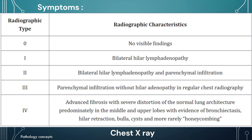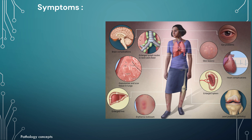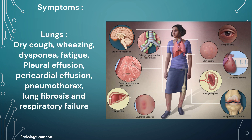Based on X-ray findings, different radiographic stages have been described. Type 0 shows no visible findings. Type 1 has bilateral hilar lymphadenopathy. Type 2 includes bilateral hilar lymphadenopathy plus parenchymal infiltration. Type 3 includes parenchymal infiltration without adenopathy. Type 4 shows advanced fibrosis with severe distortion of normal lung architecture, predominantly in the middle and upper lobes, with evidence of bronchiectasis.